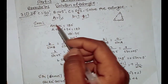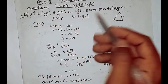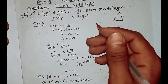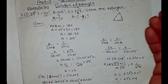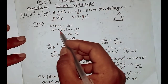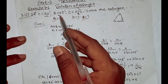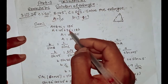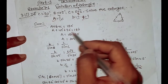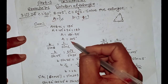We know that A plus B plus C equals 180 degrees. So A plus 45 plus 30 equals 180 degrees. Therefore A equals 180 minus 75, which gives A equals 105 degrees.